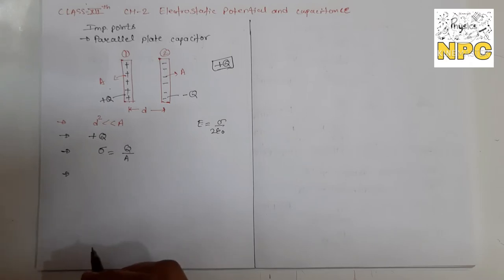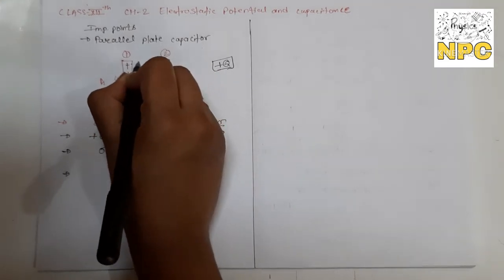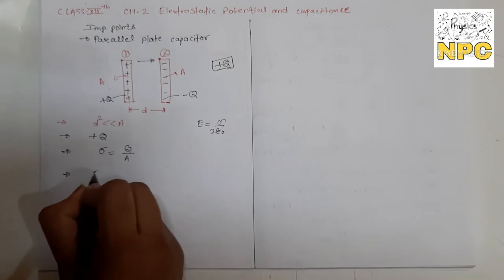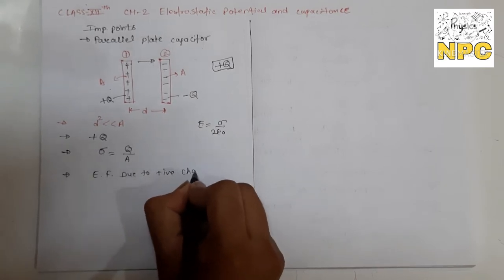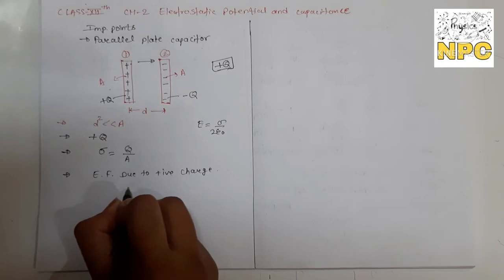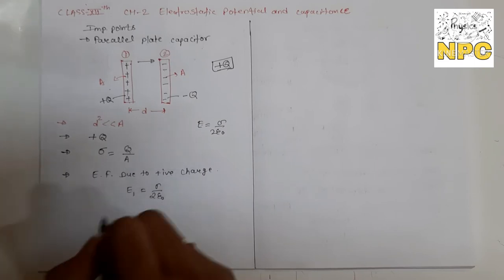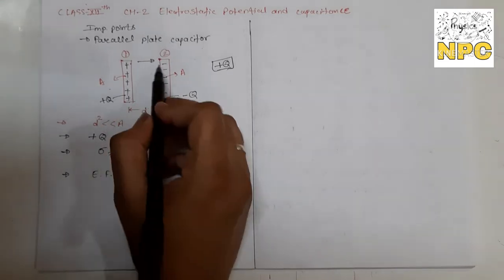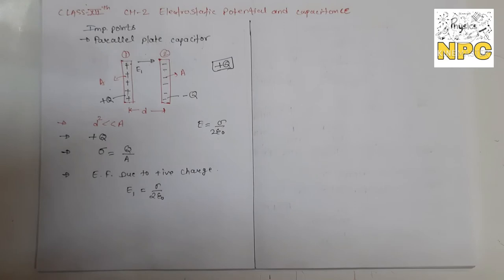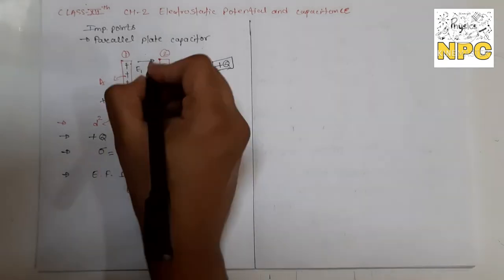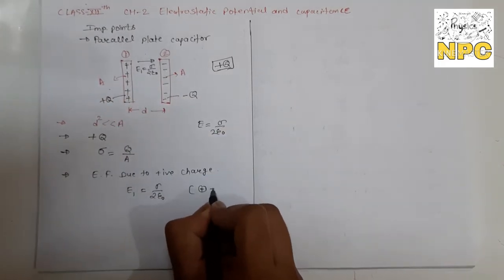The electric field due to the positive charge plate: the direction is from positive to negative. E1 = σ/(2ε₀). The electric field due to the negatively charged plate also points from positive to negative — the direction is the same. So E2 = σ/(2ε₀) as well. Both fields are in the same direction.